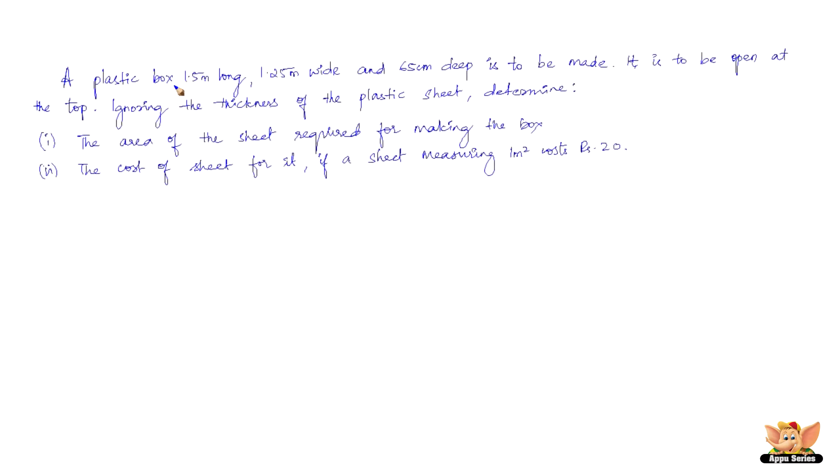Now, let us solve another problem. A plastic box 1.5 meters long, 1.25 meters wide and 65 cm deep is to be made. It is to be open at the top. Ignoring the thickness of the plastic sheet, determine the area of the sheet required for making the box. The cost of sheet for it if a sheet measuring 1 meter square costs Rs 20.